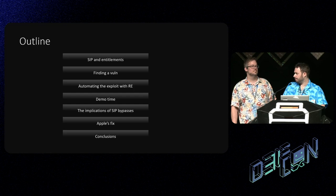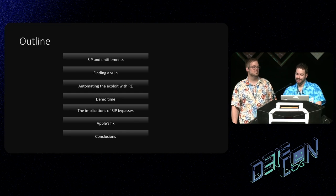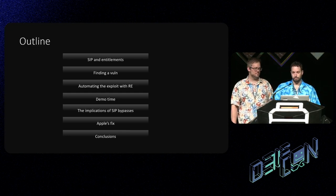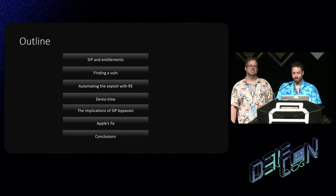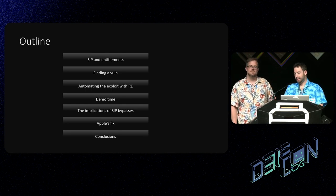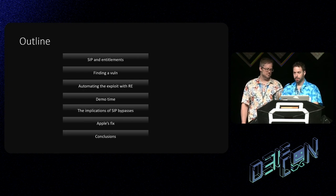The outline for today is talking about some of the macOS mechanisms, specifically SIP and entitlements. We're going to talk about how we found a vulnerability by mistake, how we automated our exploit by means of reverse engineering. We'll have a demo. We'll talk about the implications of what we've done, Apple's fix, and then we'll have some conclusions. So let's get to it.